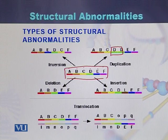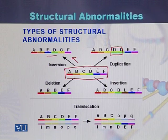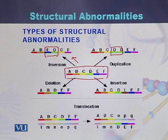In the case of inversion, we will see that it is A, B, and there is an inversion — instead of D here is E, and instead of E here is D. So this part of the chromosome has been inversed; such a phenomenon is called inversion.